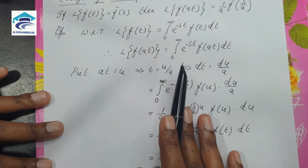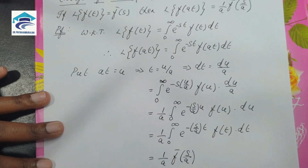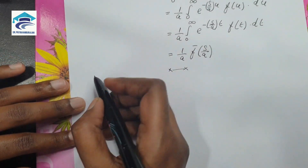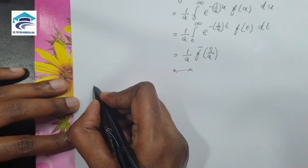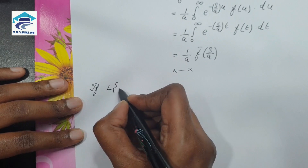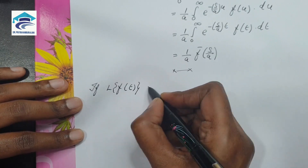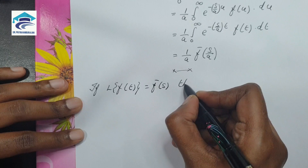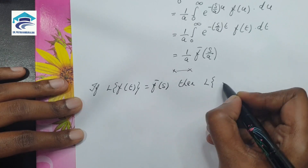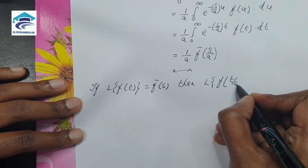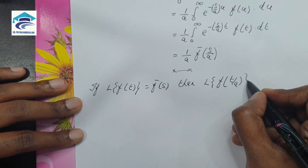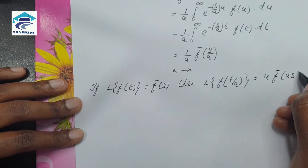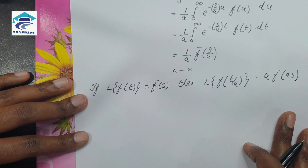Under the change of scale property we are going to prove one more thing: if L of f(t) is equal to F̄(s), then L of f(t/a) is equal to a times F̄(as). We need to prove this also.